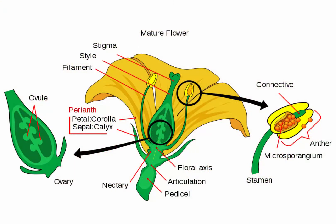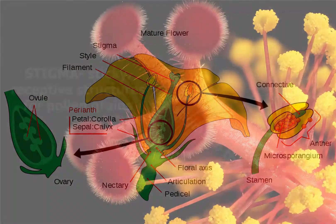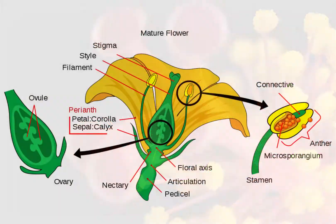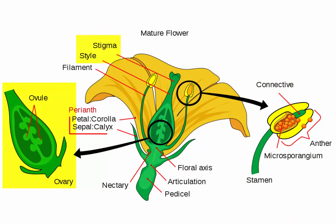The pistil, on the other hand, is the female part and consists of the stigma, which is connected by a stalk-like style to the ovary. The ovary will later develop into a fruit and the ovules in it will become seeds.